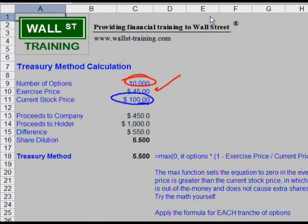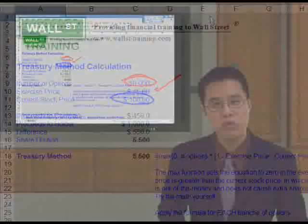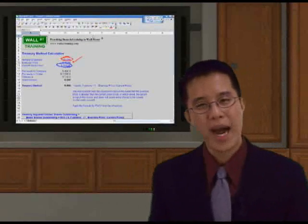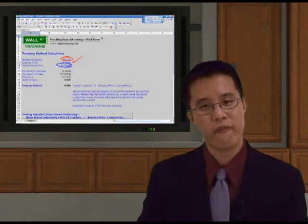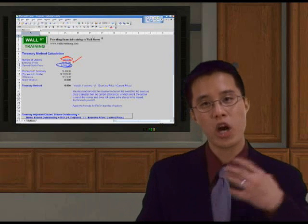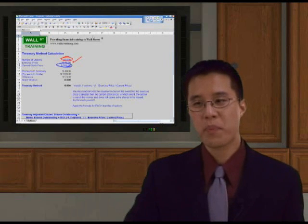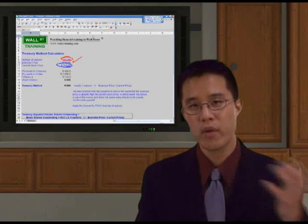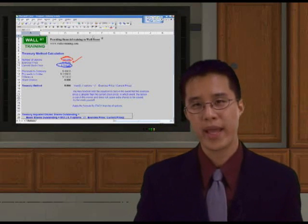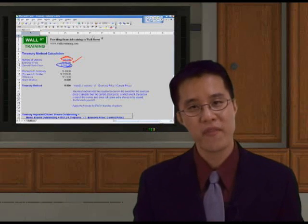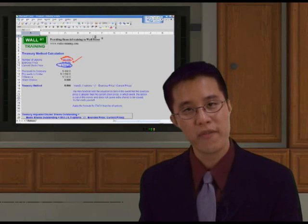If you were the management team, what would you do? You have the right to buy a share or buy an asset at $45. The value is $100. If you were to buy it at $45 and sell it right away for $100, how much money do you make right away? $55. $100 minus $45.